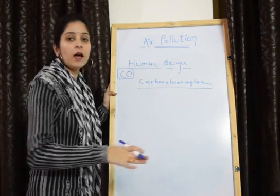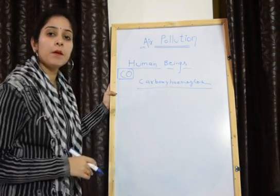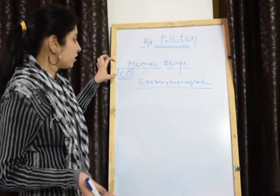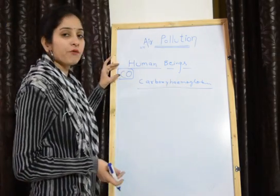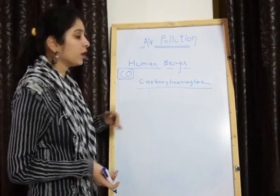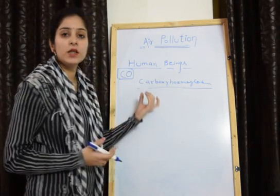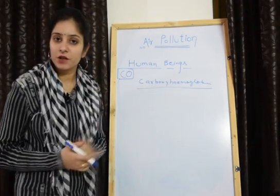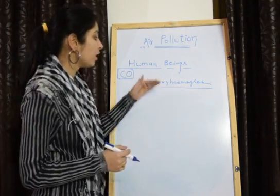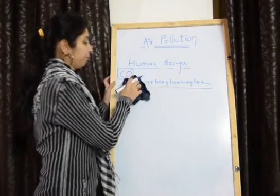Whenever oxygen enters into the blood, it makes oxyhemoglobin. But whenever there is an excess amount of carbon monoxide and we inhale it, it forms carboxyhemoglobin. Due to this, there is a deficiency of oxygen, and due to the deficiency of oxygen, a person may die.